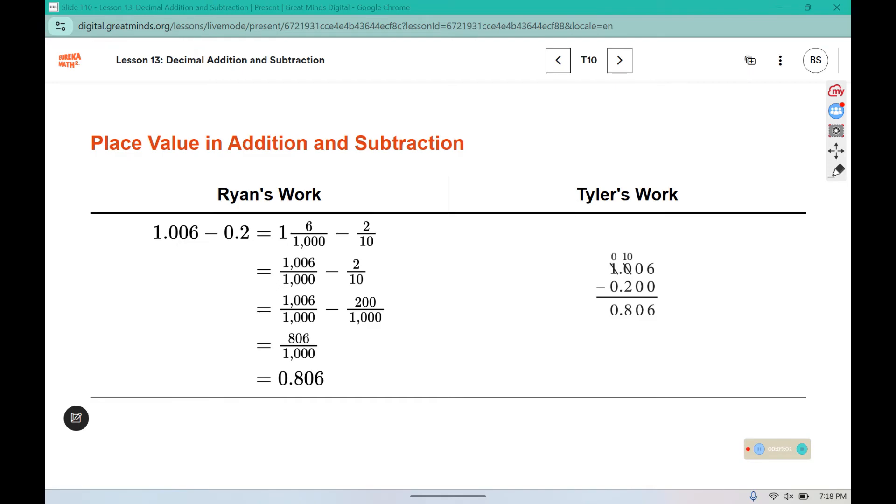These two students used different strategies to solve the last problem. Ryan rewrote it as a mixed number and then as an improper fraction. Then he converted them to have the same denominator and subtracted them using the fraction version, whereas Tyler used the standard algorithm. Just subtraction by lining them up and borrowing - two different methods to arrive at the same answer.